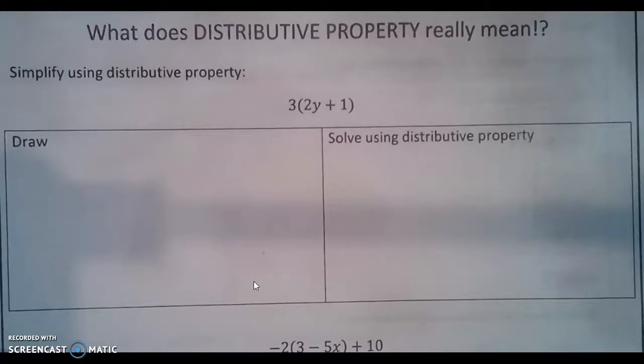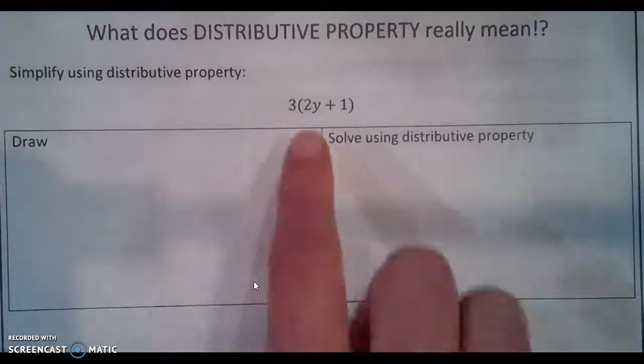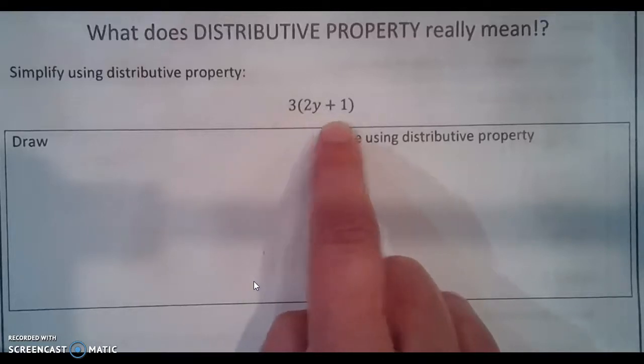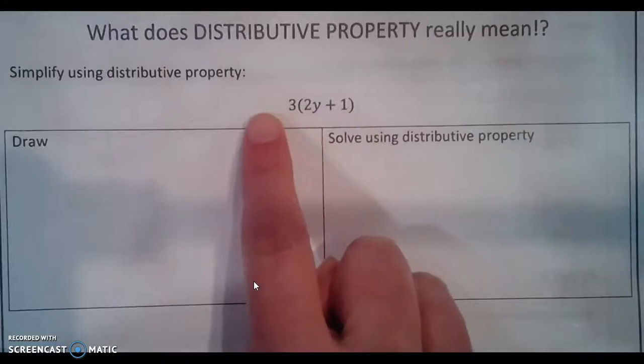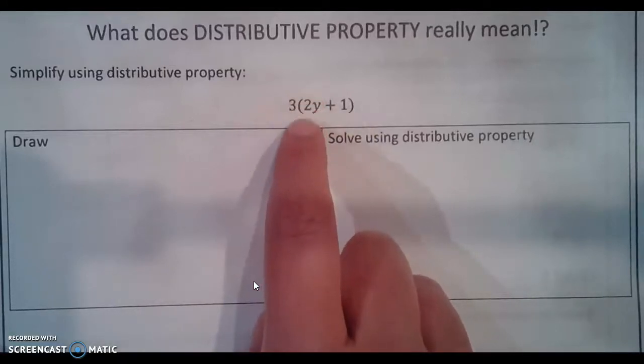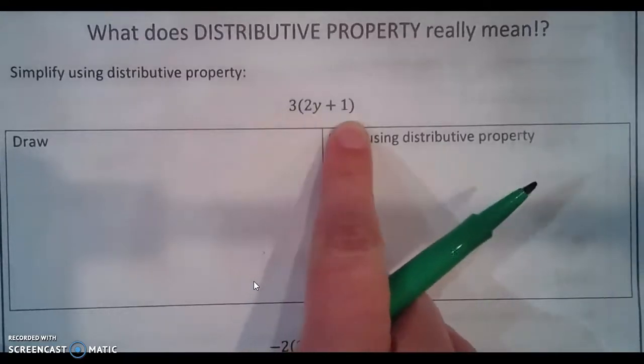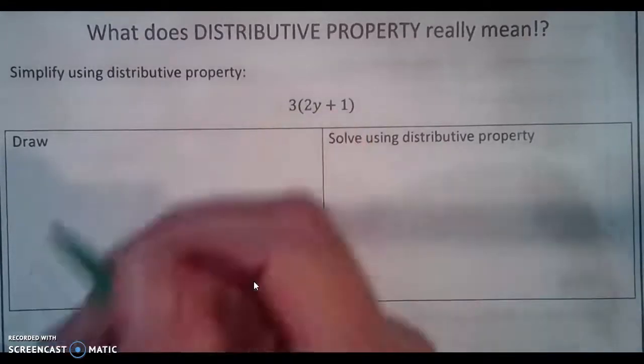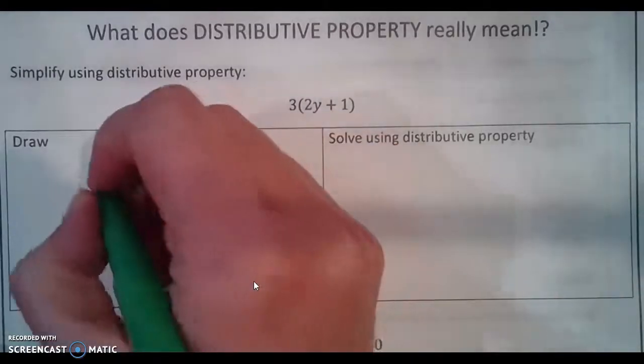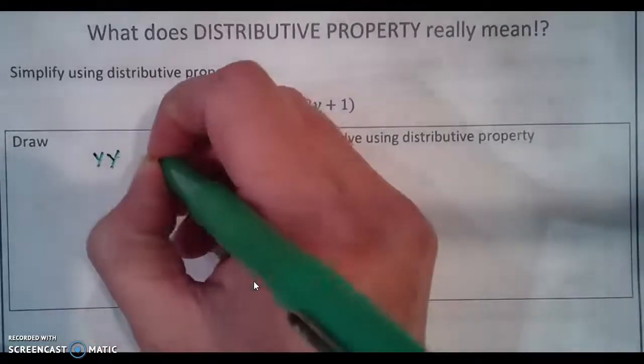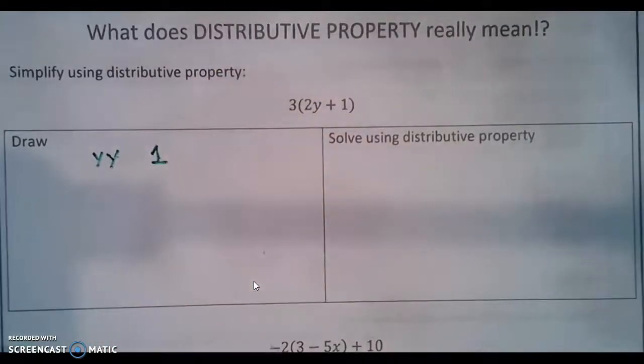Check out example one. In example one we see 3 times 2y plus 1. Notice I said times because that's the operation that we will do when the three is right next to our parentheses. But before we actually solve this I want you to really understand what this means. If I make 2y plus 1 in picture form it would look something like this. Two y means two y's plus one is plus one just like this.